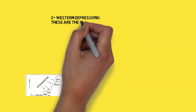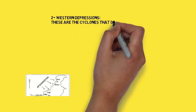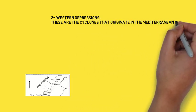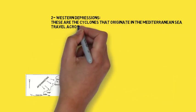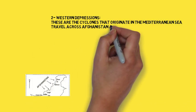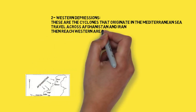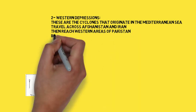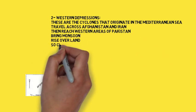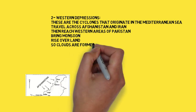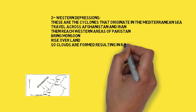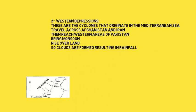Western Depressions are cyclones that originate in the Mediterranean Sea. They travel across Afghanistan and Iran, then reach the western areas of Pakistan, bringing precipitation. They rise over the land, so clouds are formed, resulting in rainfall. Quetta receives most of its rainfall from western depressions.